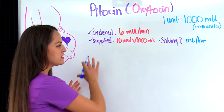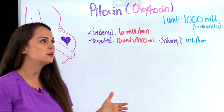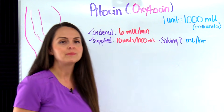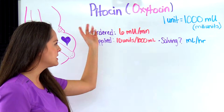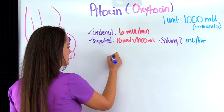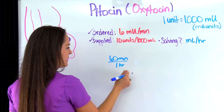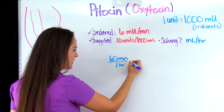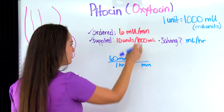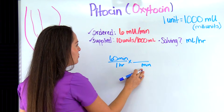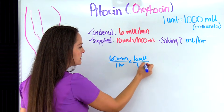With dimensional analysis, we have one consecutive problem with conversion factors that cancel out until we reach our goal: milliliters per hour. Since the problem gives us minutes, I'll start with 60 minutes equals one hour. That gives me hours, which is where I need to go. I'll multiply and bring minutes across, then plug in the problem information — every one minute the patient needs six milliunits. This cancels out minutes.